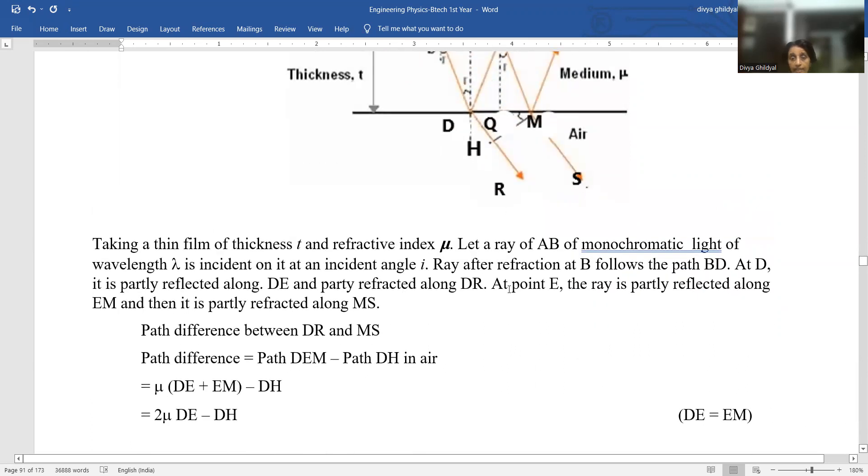Like similarly we did in Young's double slit, we did in reflected light. It is actually, this is a perpendicular that has been dropped on DR and this DH is what exactly we are working out on.